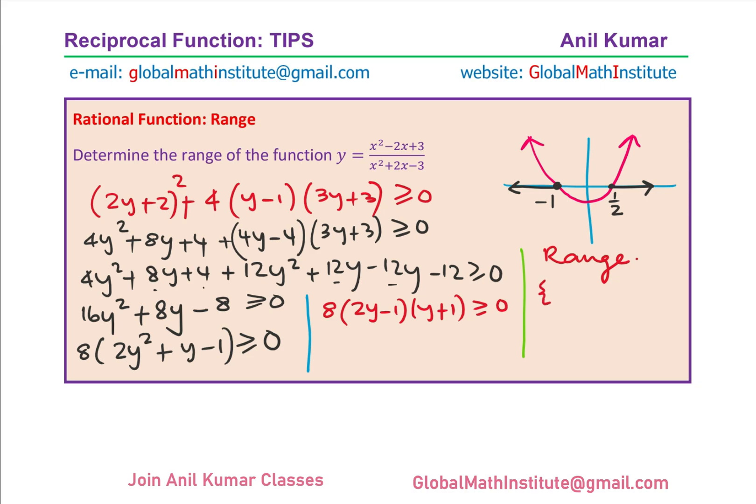So range is, in this case, y belongs to all real numbers, so that y is either less than minus 1, or y is greater than or equal to half. So that is how we can find the range of the rational function given to us, so that becomes the range for the rational function. Is this concept clear to you?